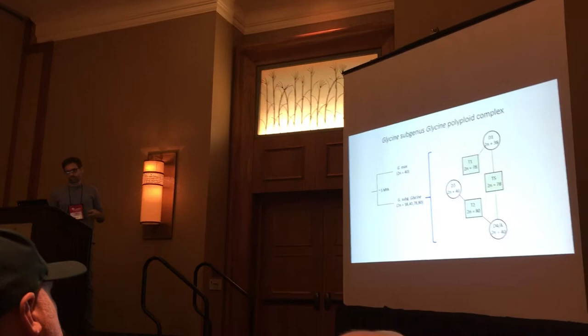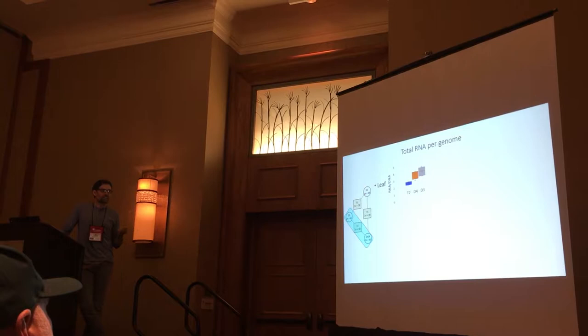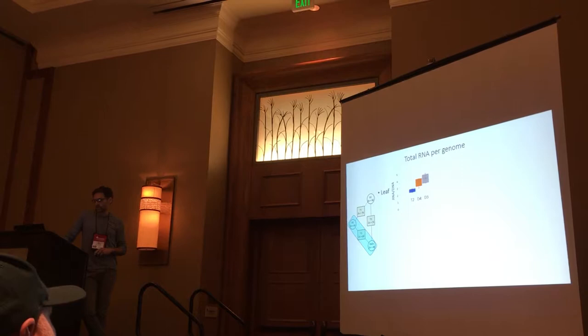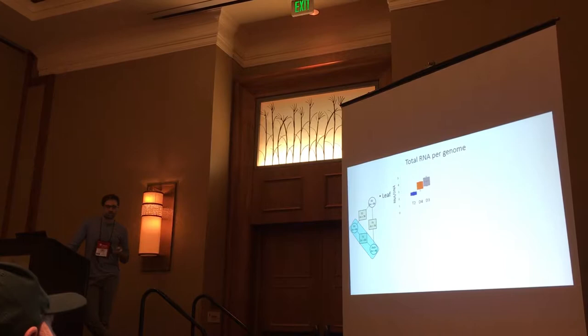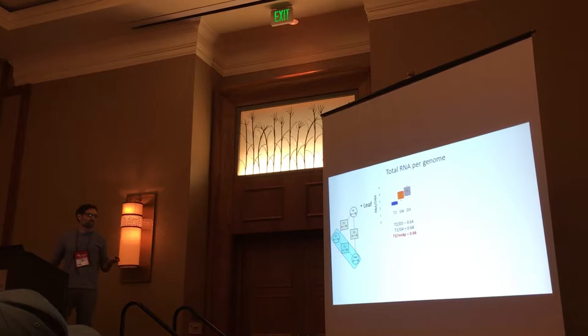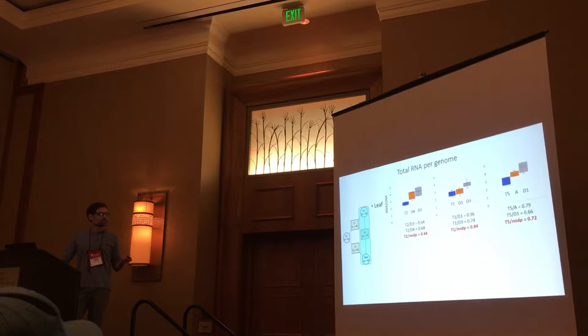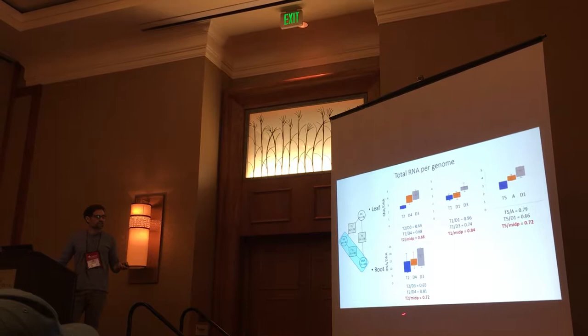Starting with leaf tissue from the T2 polyploid, here are the RNA-per-DNA ratios we observe in the polyploid, shown in blue, and its diploid progenitors in orange and gray. You can see there's a reduction in transcription on a per-genome basis in the polyploid — about two-thirds of the mid-parent diploid progenitors. We see smaller but similar reductions in the T1 and T5 polyploids, and also in root tissue from T2.